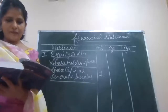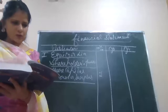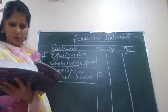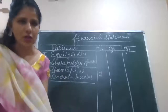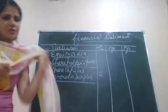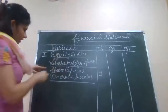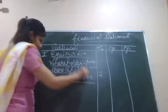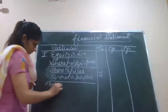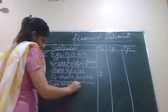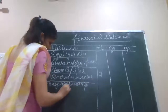Then we have money received against share warrants. That also I told you, whereby the company promises to give the shares on some later day. So that is again a subhead after reserve and surplus — money received against share warrants.